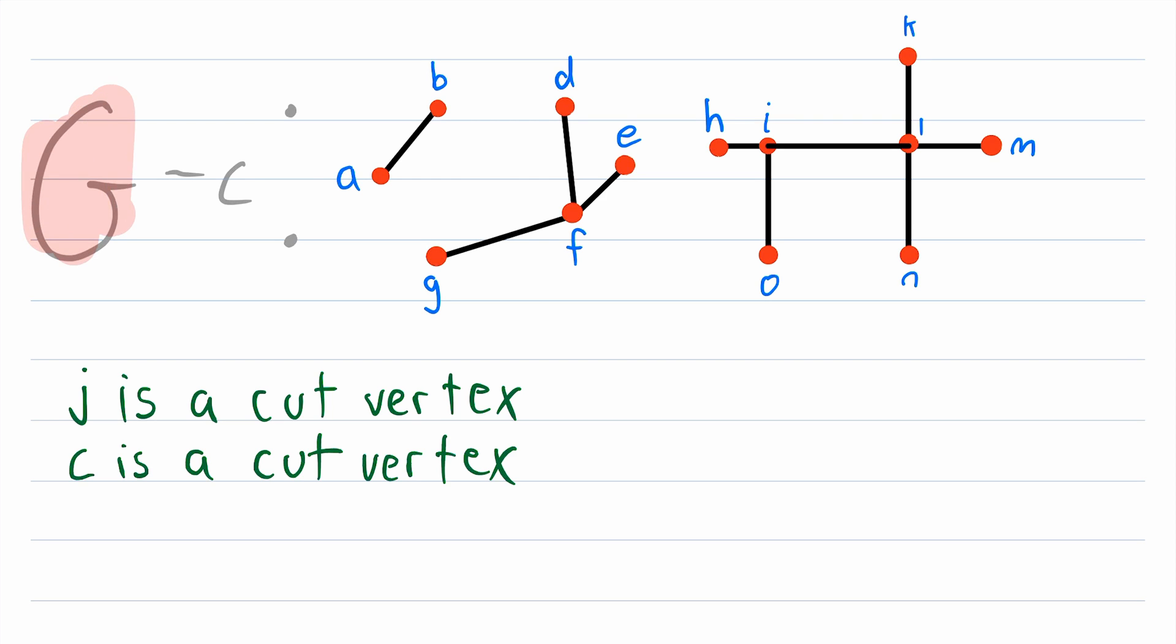So again, if the graph without the vertex has more components than the graph with the vertex, then that vertex is a cut vertex. Another way you can think about cut vertices is that a vertex is a cut vertex if by deleting that vertex and its incident edges, you disconnect the component that that vertex belonged to.